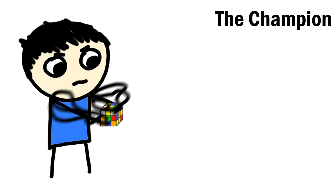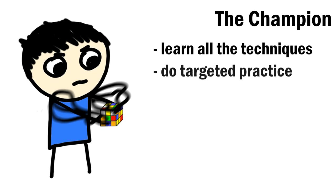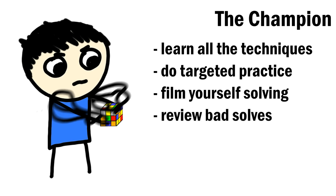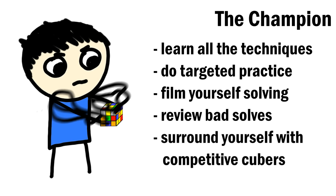If you want to win competitions, set records, be the best you can be, and maybe even the best in the world, then learn all the techniques you need to do different types of targeted practice where you try to identify your weaknesses and then fix them. Film yourself solving and try to figure out what you were doing wrong. When you get a bad solve, actually go back and look at it to see what you could have done better instead of just saying, I'll try better next time. And surround yourself with people who are also trying to get faster so you feel motivated and competitive.